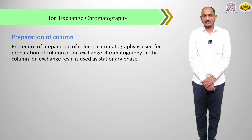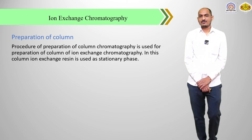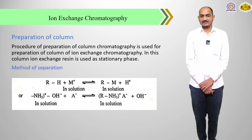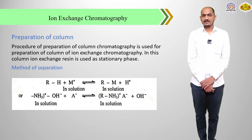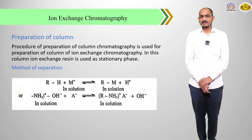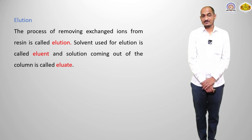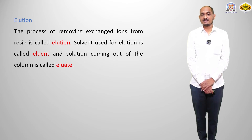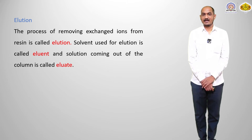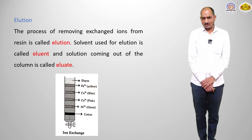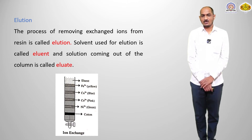The next point about ion exchange chromatography is the preparation of the column. The procedure for preparation of a column is the same as for column chromatography, and the ion exchange resin is used as the stationary phase. The next point is the method of separation and elution. The process of removing exchange ions from the resin is called elution; the solvent used for elution is called the eluent, and the solute coming out of the column is called the eluate. This is a typical ion exchange column showing different colored bands formed in the column after separation.